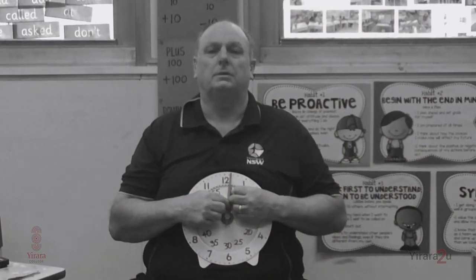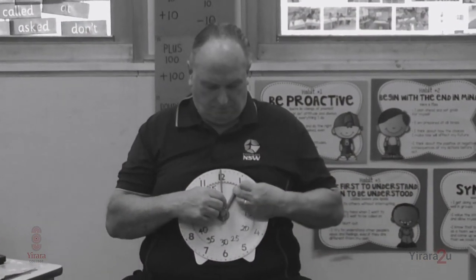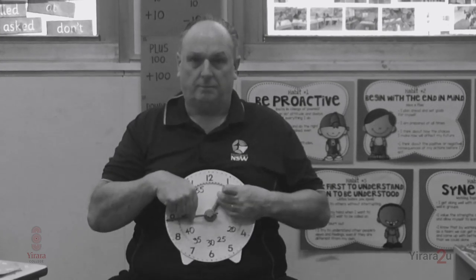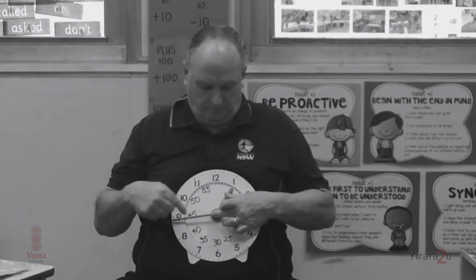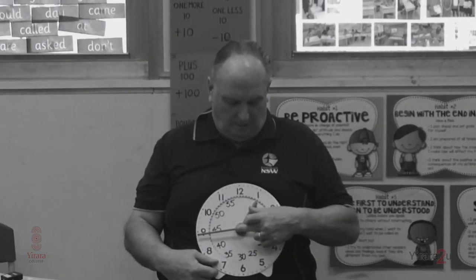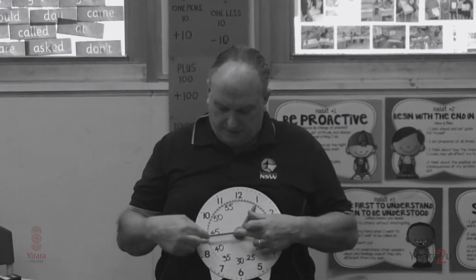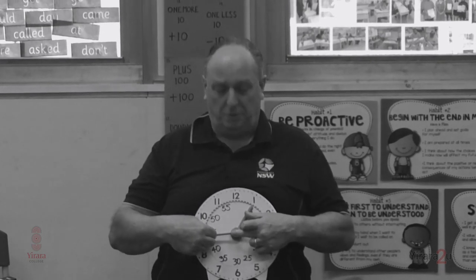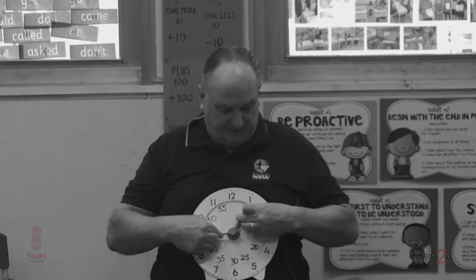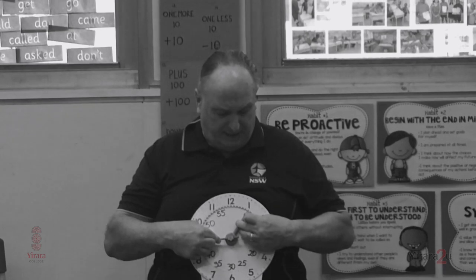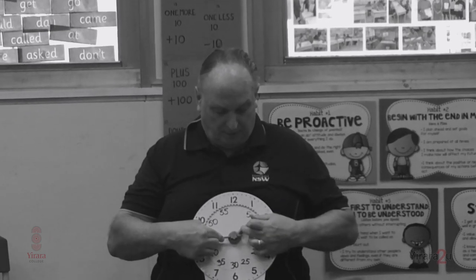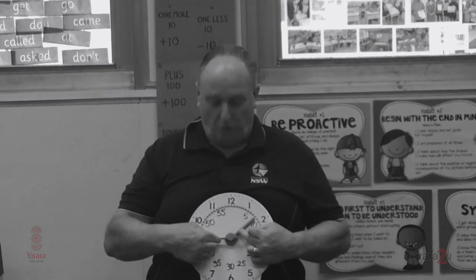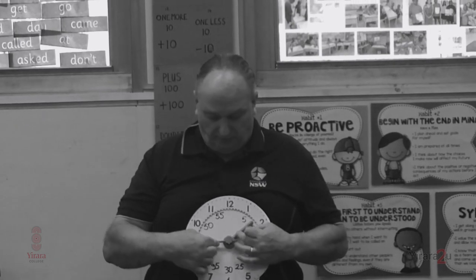The hour hand is 1 and the minute hand is 9. What time is it Mr Mark? Because we're working on quarter to 2, the big hand is now going nearer to the 2. So this would be quarter to 2, or 1:45.